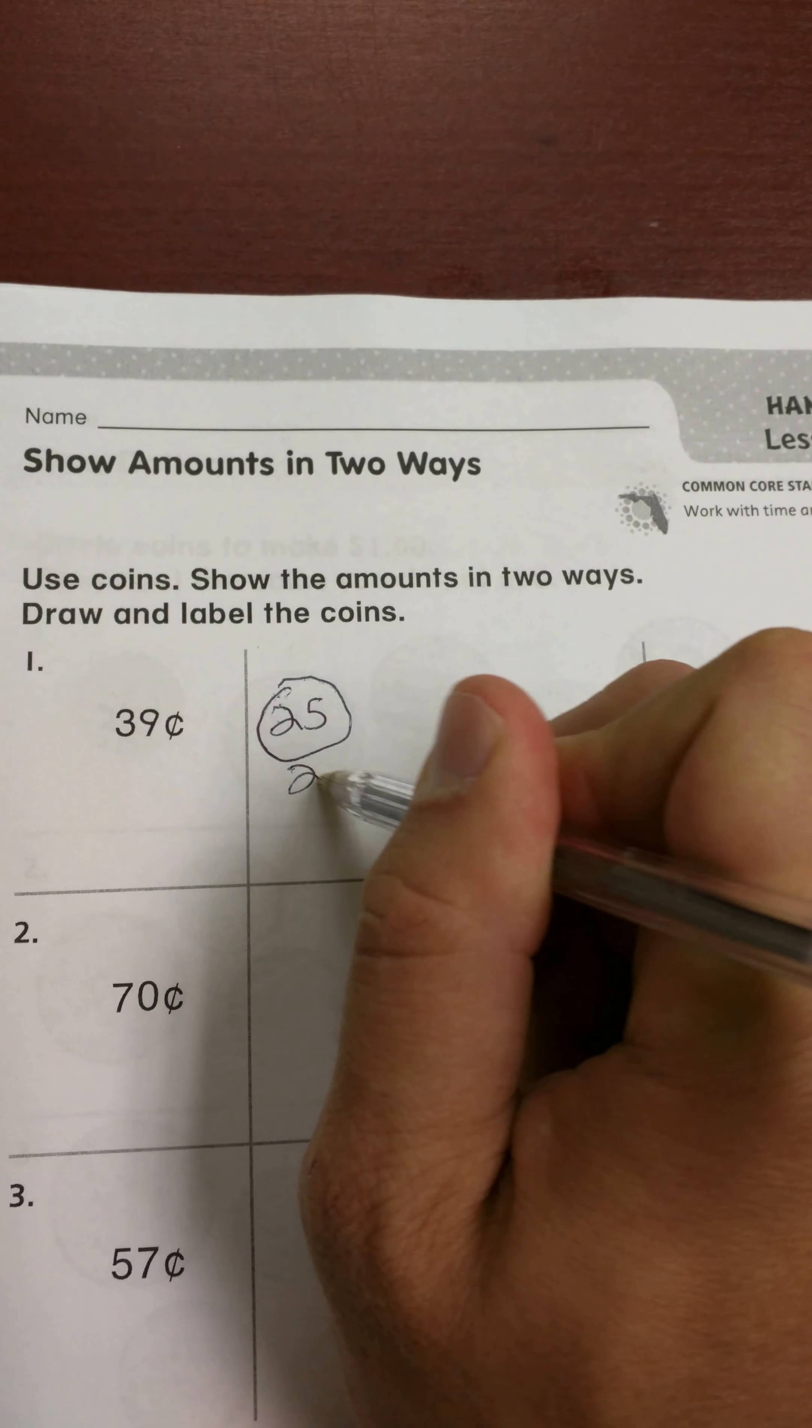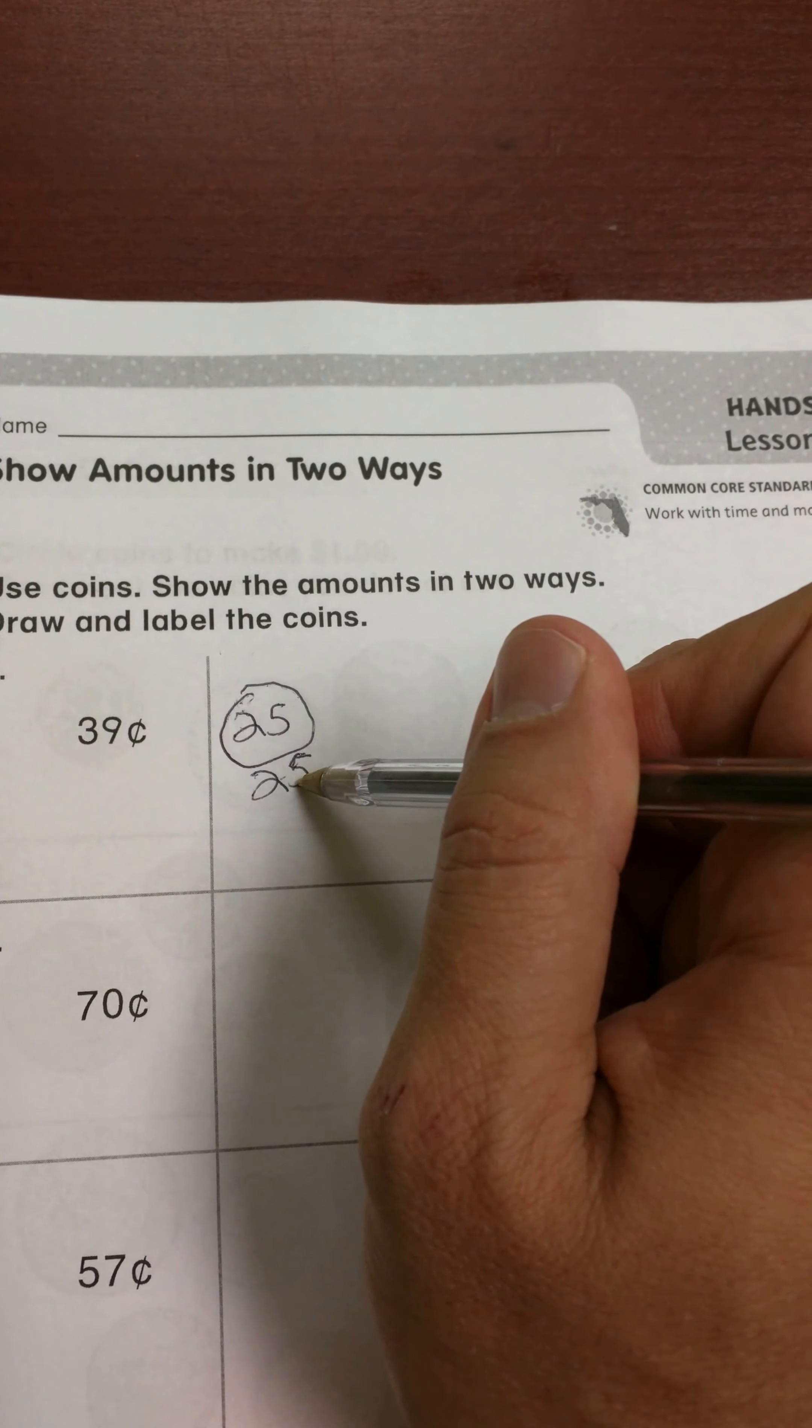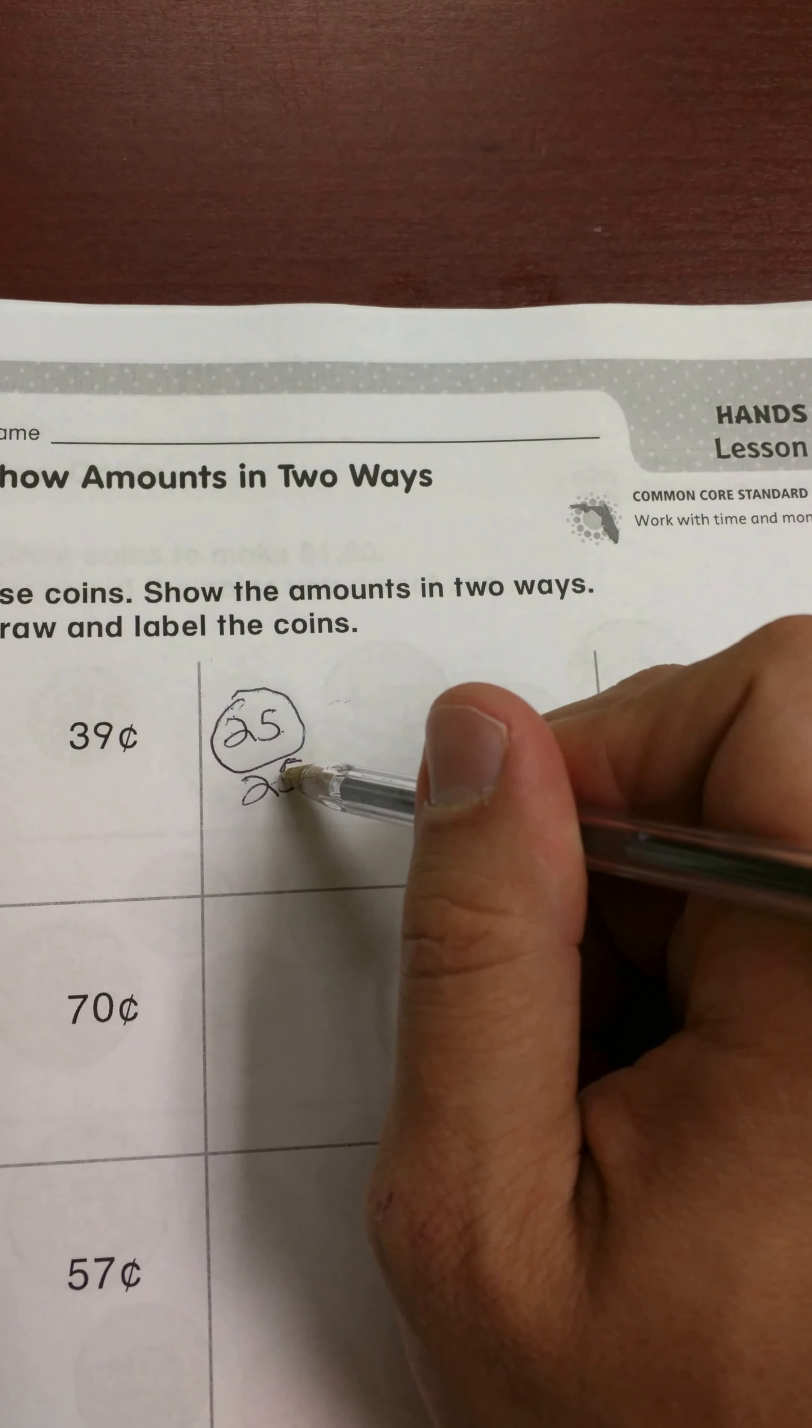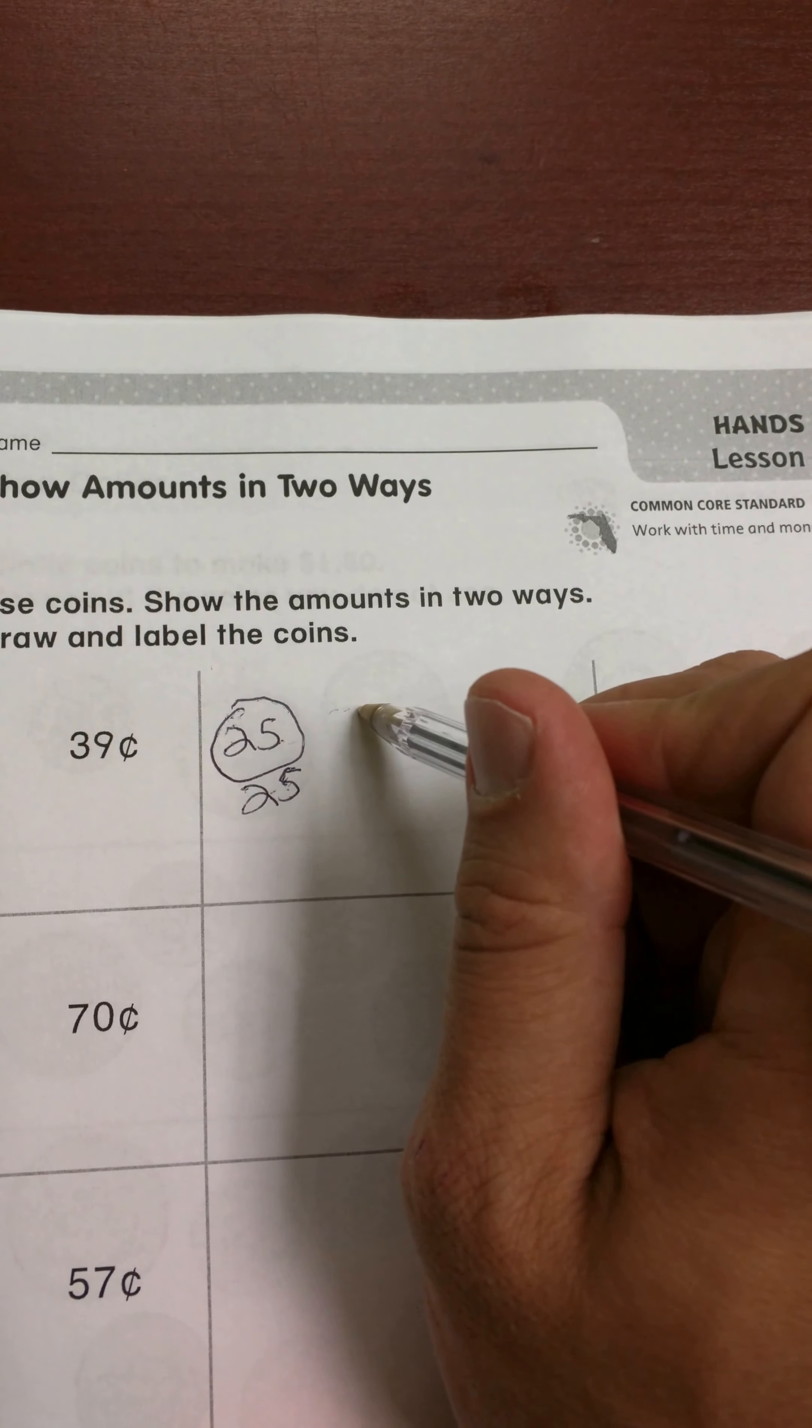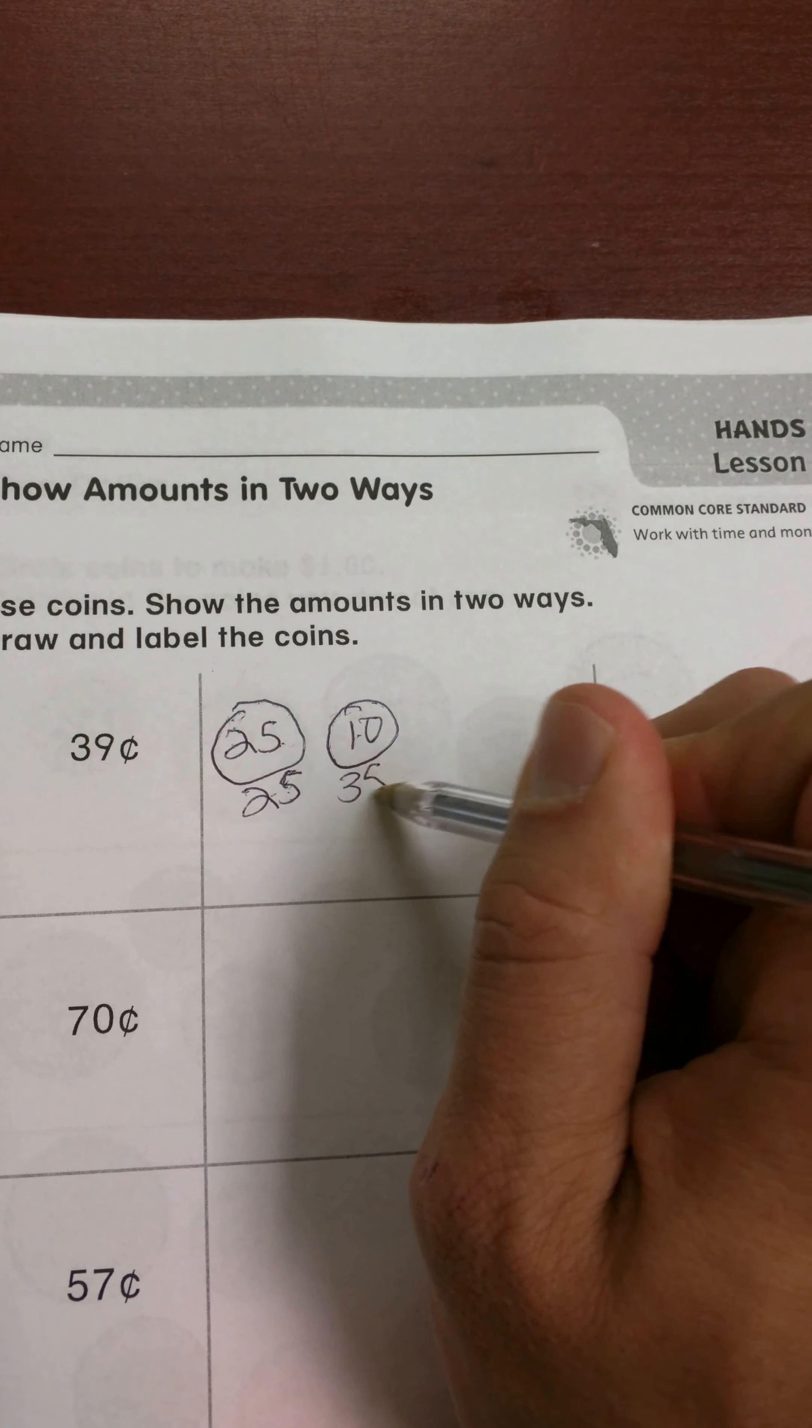And I'm going to do a running total below it, just so I keep track. The book doesn't necessarily say anything about doing a running total. It's something I do with my students that I think helps. If I add another quarter that would be 50, so I know my next biggest coin would be a dime. So 10 plus 25 would be 35. So I can use a dime. So I have a dime here and I'm going to make this 35 here.